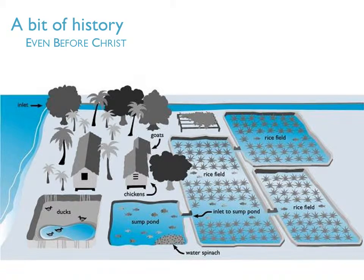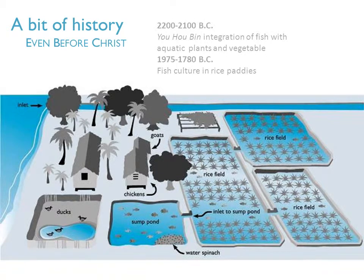IMTA can be traced back to the origins of aquaculture, probably 5000 years ago. At least that's the documentation and records we have. There is a document with a detailed description of the integration of fish with aquatic plants and vegetables, and this was in China.